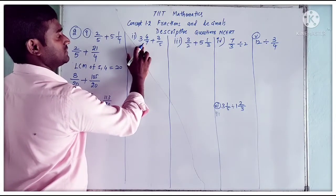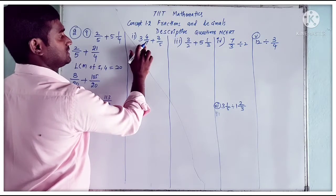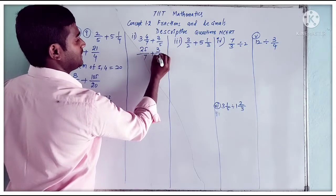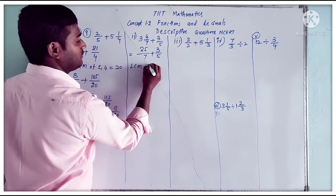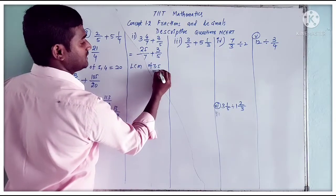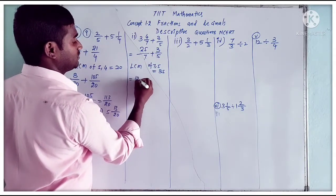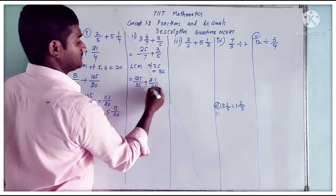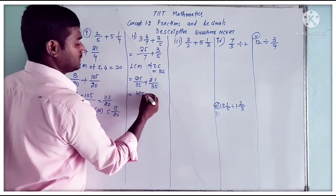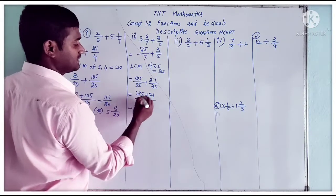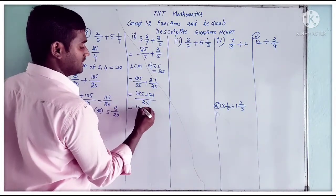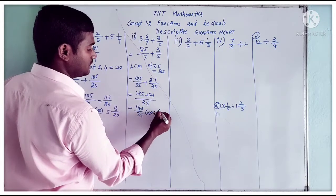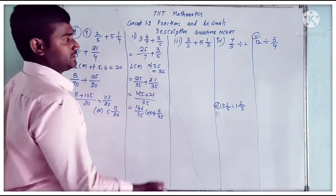Second part: 3 and 4 by 7 plus 3 by 5. The mixed fraction 3 and 4 by 7 converts to improper: 7 threes are 21, plus 4 equals 25 by 7. Different denominators, so LCM of 7 and 5 is 35. Multiply: 25 by 7 becomes 125 by 35, and 3 by 5 becomes 21 by 35. So 125 plus 21 equals 146 by 35, or in mixed fraction, 4 and 6 by 35.